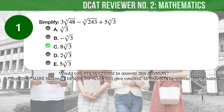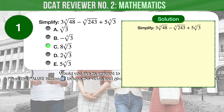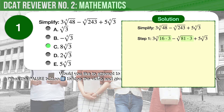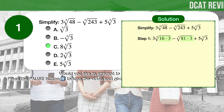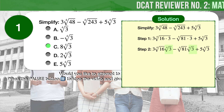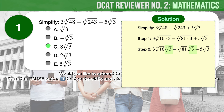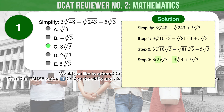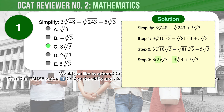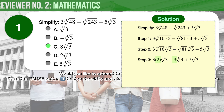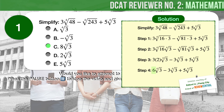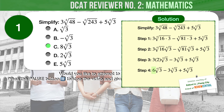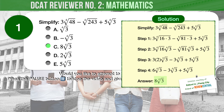The correct answer is C: 8 times the 4th root of 3. Step 1: Express 48 and 243 as 16 times 3, and 81 times 3, respectively. Step 2: Factor out the 4th root of 3 from the first two expressions. Step 3: The 4th root of 16 is 2, and the 4th root of 81 is 3. Step 4: 3 times 2 is 6. Now we have all three expressions with 4th root of 3 as their common factor. 6 minus 3 plus 5 equals 8. Therefore, our final answer is 8 times the 4th root of 3.